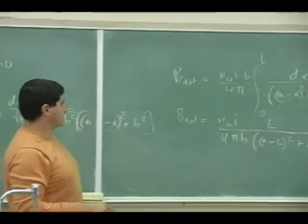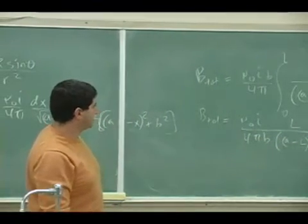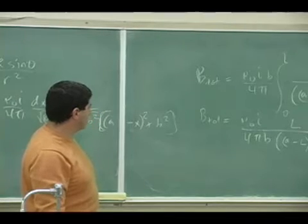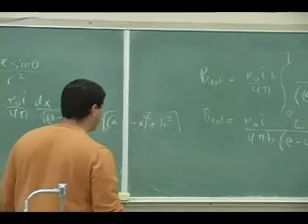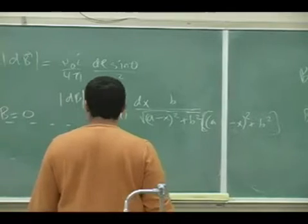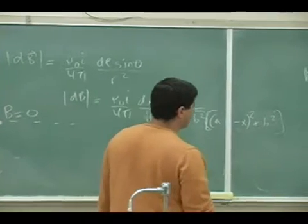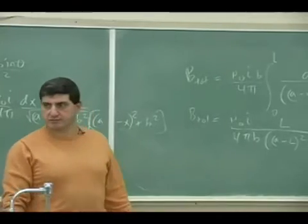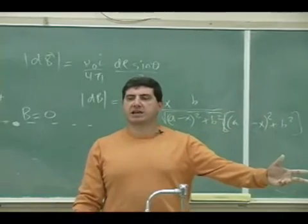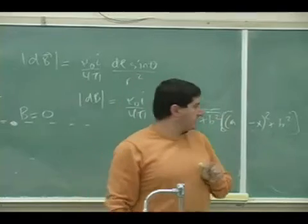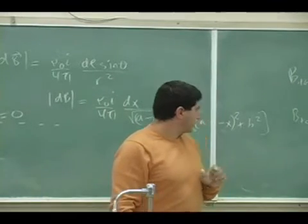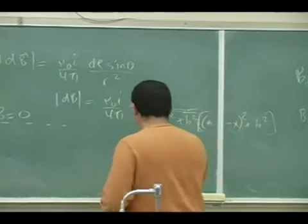I guess that's it. That's as simple as you can get it. Mu zero I over L over four pi B times A minus L squared plus B squared to the one half. So we've got a general answer. Now we can say, what would it be if we see at different points?